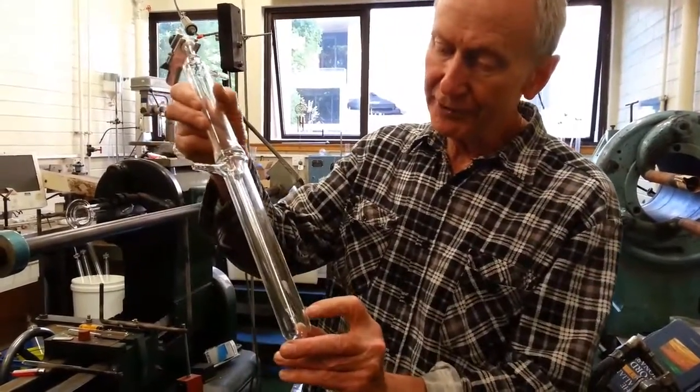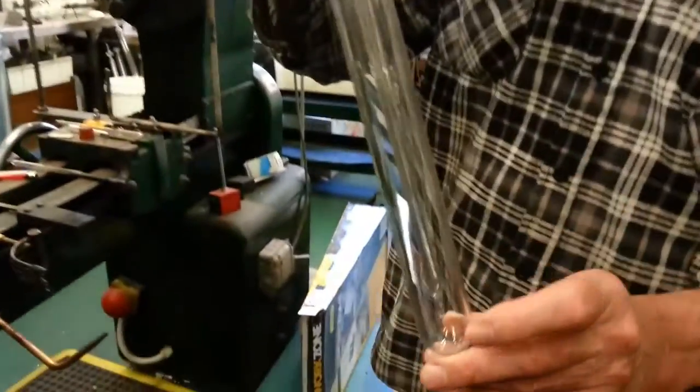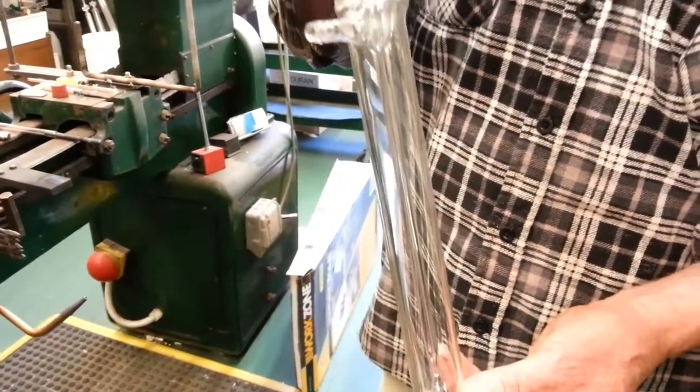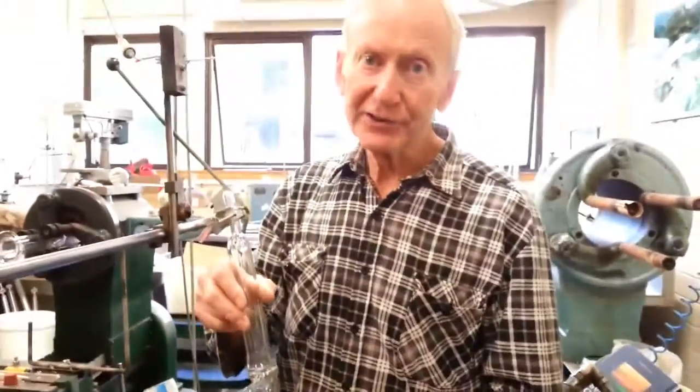Also, I put a very fine capillary down here, because one of the problems with oil bubblers is you can easily get sucked back when you get a negative pressure. With mercury you don't.